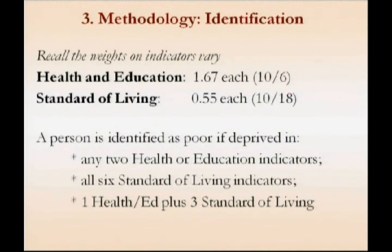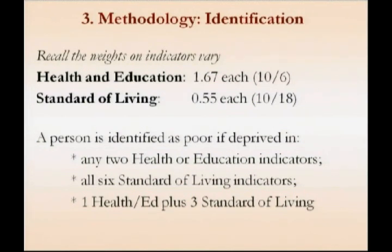Furthermore, there are data issues — data can be inaccurate. So identification serves two purposes: one is to allow some scope for personal choice and for difficulties in comparability across countries. For example, Uzbekistan has very high cooking fuel deprivation, so some countries have particular configurations. The second purpose is to correct for inaccuracies. We identify any person as multidimensionally poor if the weighted sum — having applied weights of one-sixth on each of the health and education indicators and one-eighteenth on standard of living — equals 30%, or 3 out of 10.